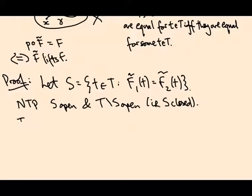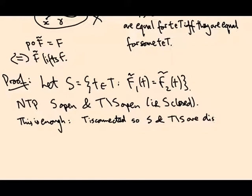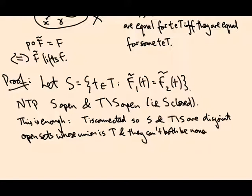And I claim this is enough, because T is connected. So these are two disjoint open sets whose union is T. So if one of them is not empty, so if there's some point where they agree, then the other one has to be empty. So they agree everywhere. S and T minus S are disjoint open sets whose union is T, and they can't both be nonempty. Because T is connected, so as soon as we know there's some points in S, we know everything is in S.